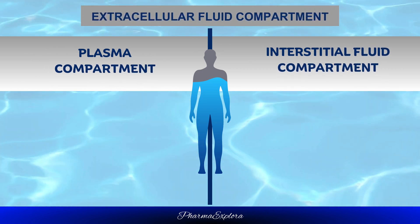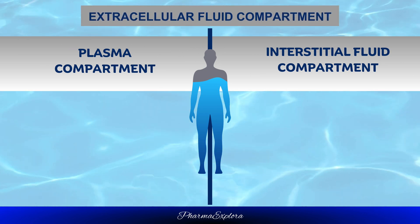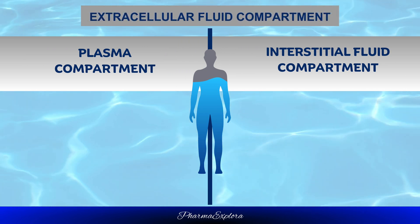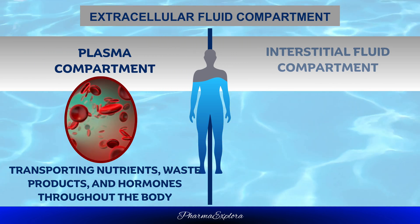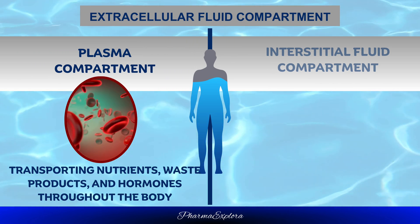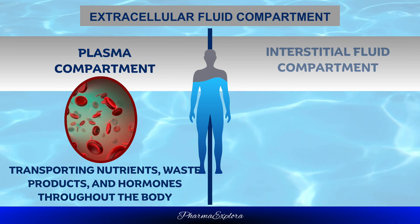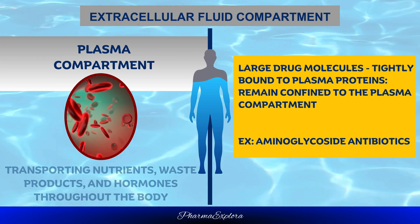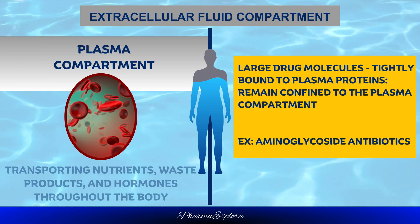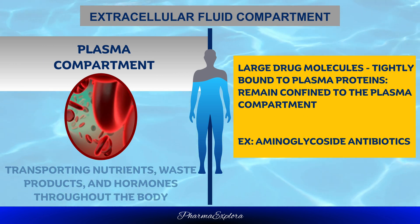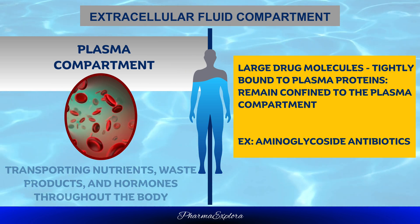The extracellular fluid compartment is further subdivided into the plasma compartment and the interstitial fluid compartment. The plasma compartment is the liquid portion of blood, composed of water, electrolytes, proteins, and other solutes, and is responsible for transporting nutrients, waste products, and hormones throughout the body. Large drug molecules, or those tightly bound to plasma proteins, cannot easily escape the bloodstream and remain confined to the plasma compartment — about 6% of body weight, or around 4 liters in a 70 kg person.